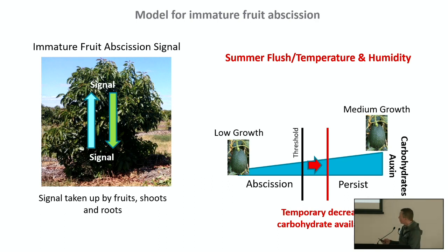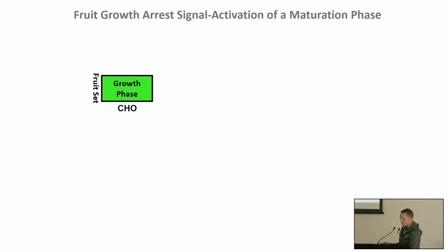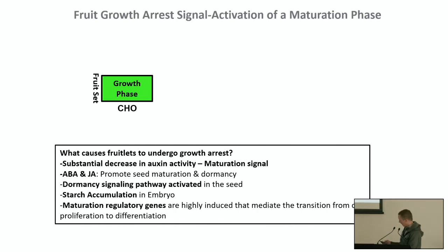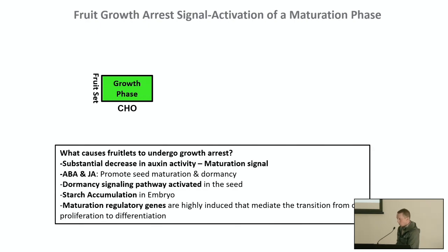Throughout the summer growing season, there are probably periods of temporary decrease in carbohydrate availability — particularly when the summer flush initiates or during high temperature and low humidity. Under those conditions, overall carbohydrate levels in fruits would decrease, shifting the threshold and representing a fruit drop event. At the fruit level, both carbohydrates and auxin are stimulating growth.